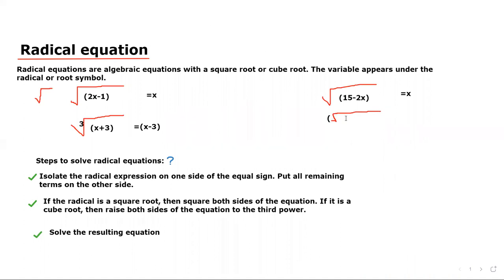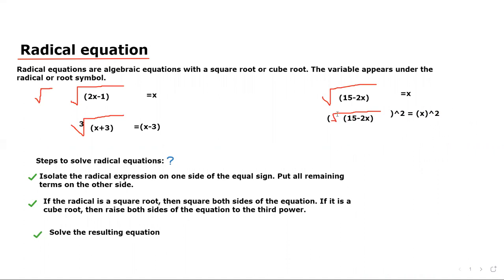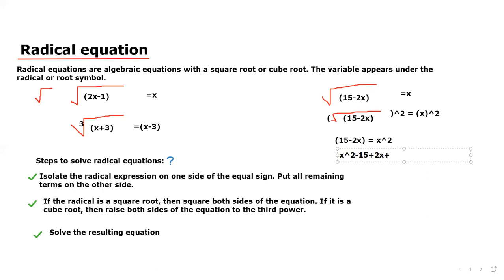So, squaring both sides of the equation, we get: square root of 15 minus 2x equals x. Squaring both sides, the square eliminates the radical symbol, so this becomes 15 minus 2x equals x squared.